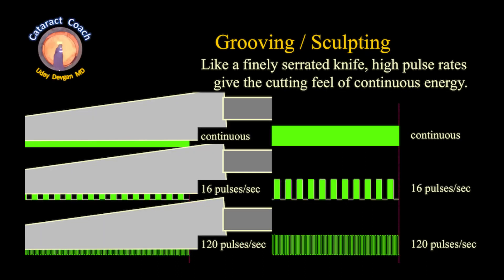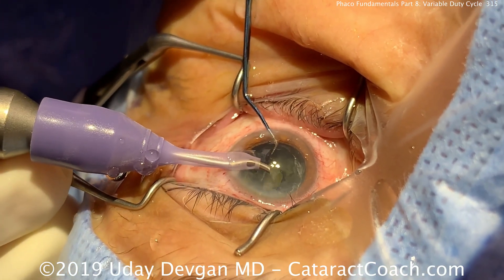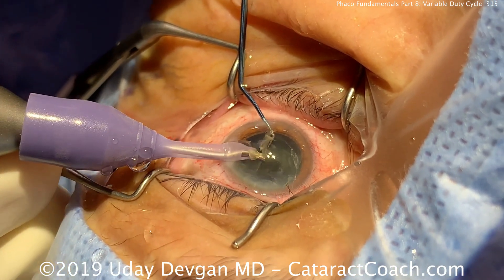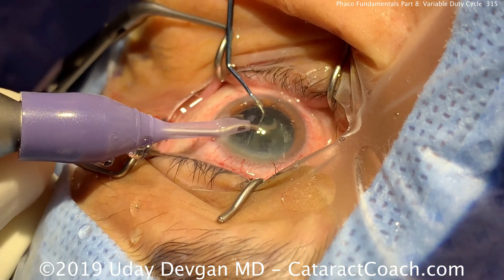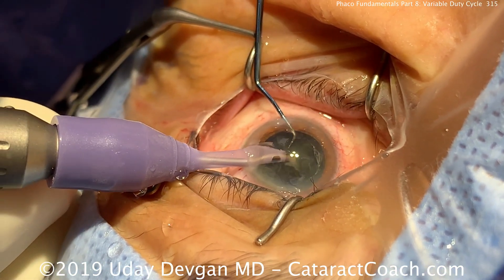Why do you want to do that? Well, if you're going to do something like grooving or sculpting, using a finely serrated knife is the analogy. If you have 100 pulses per second, that's going to cut pretty smoothly — maybe better than the others. Looking at this surgery here, listen for it — you can hear the ultrasound energy being delivered in very high pulses.